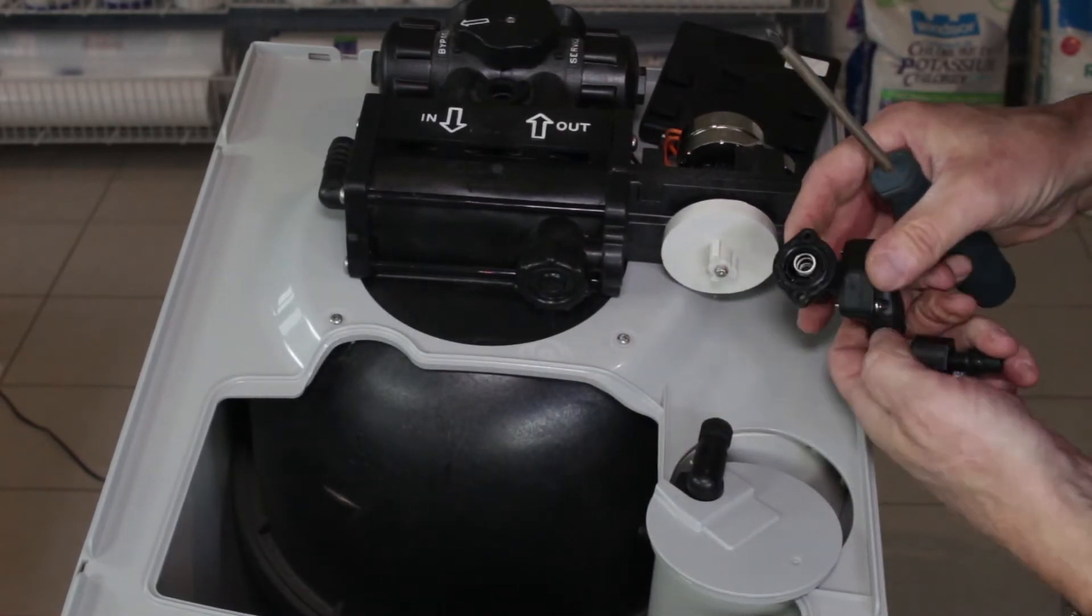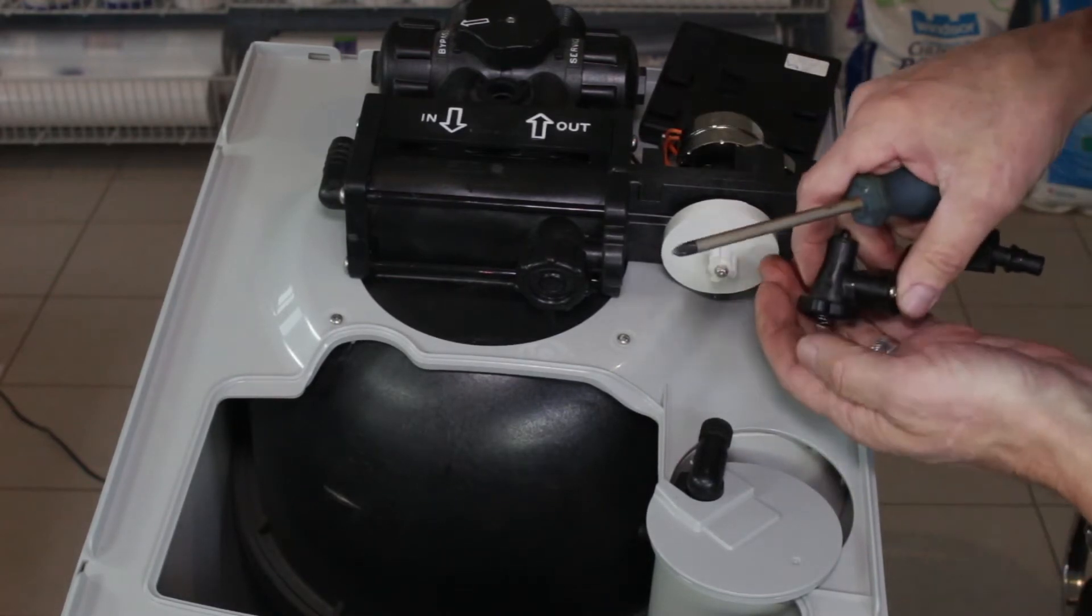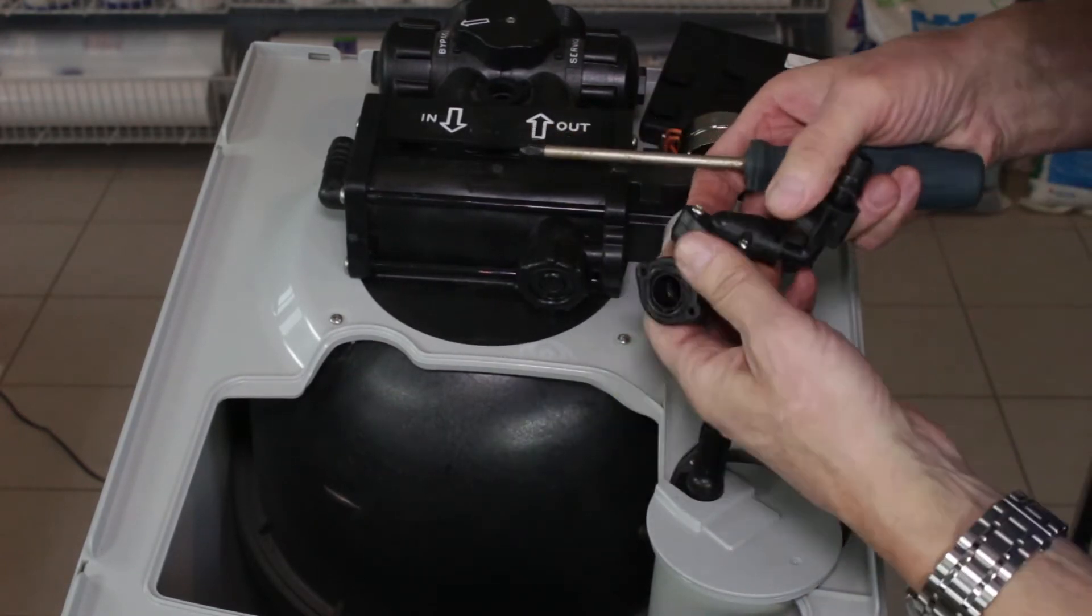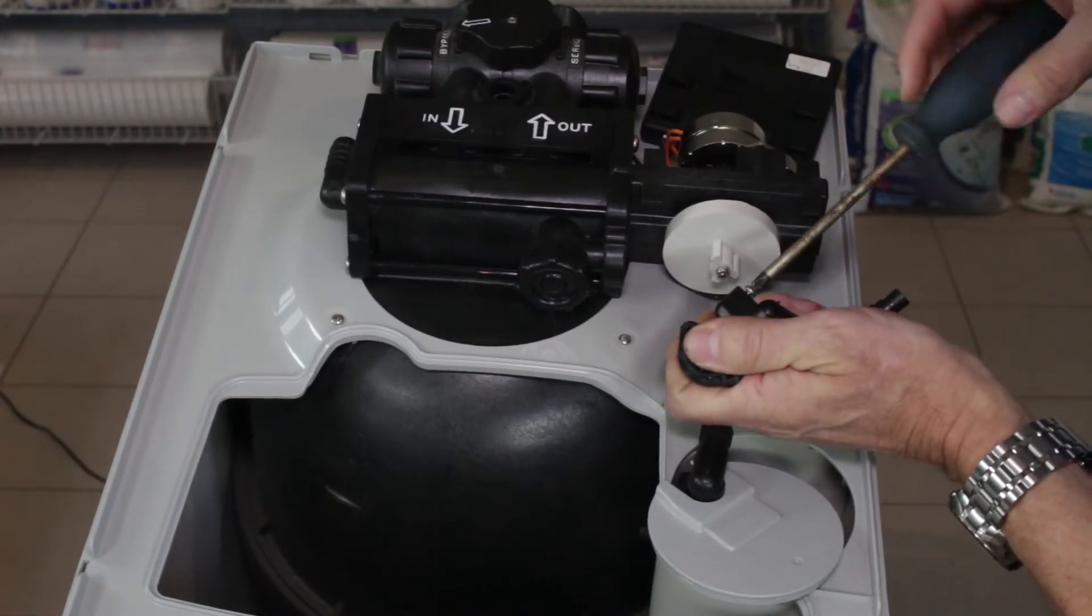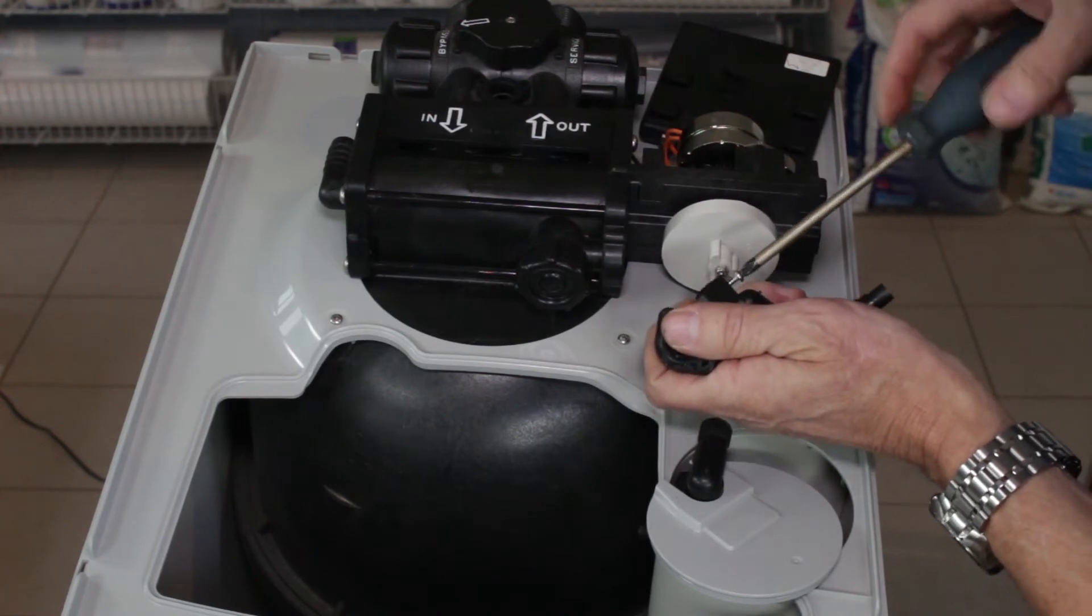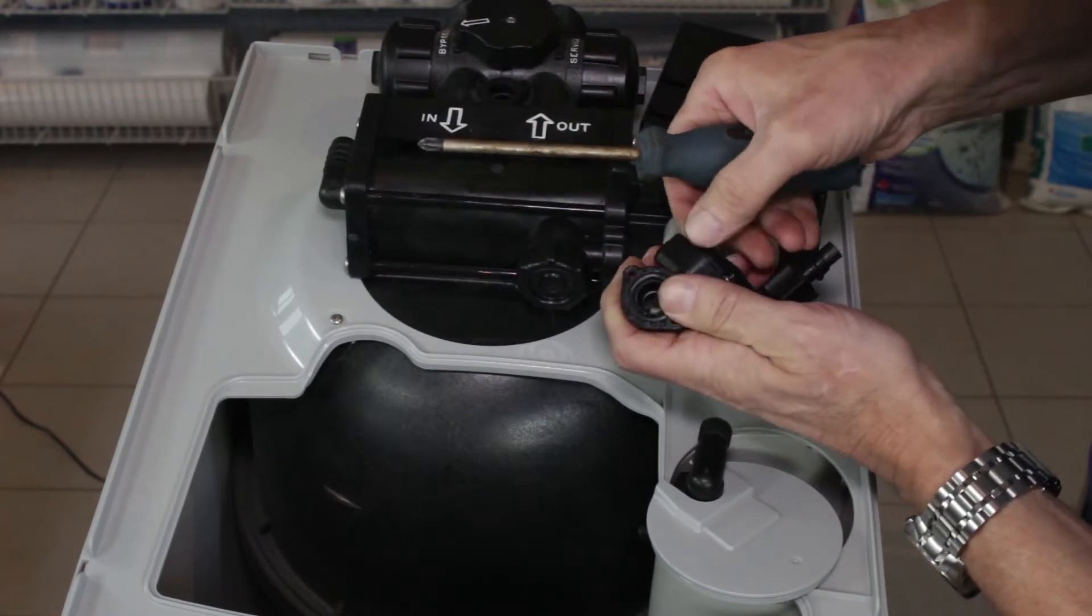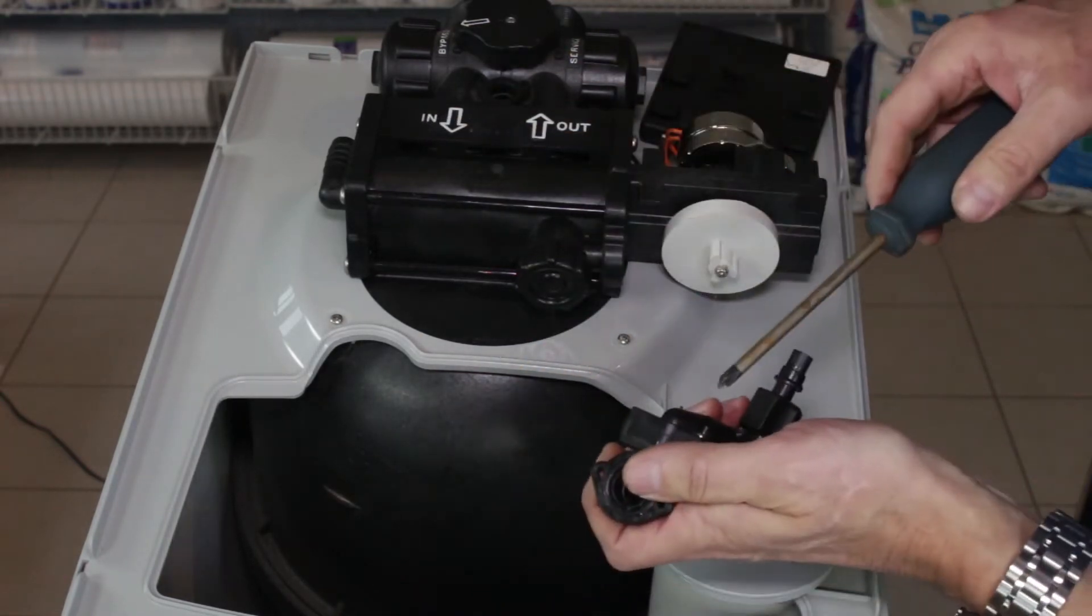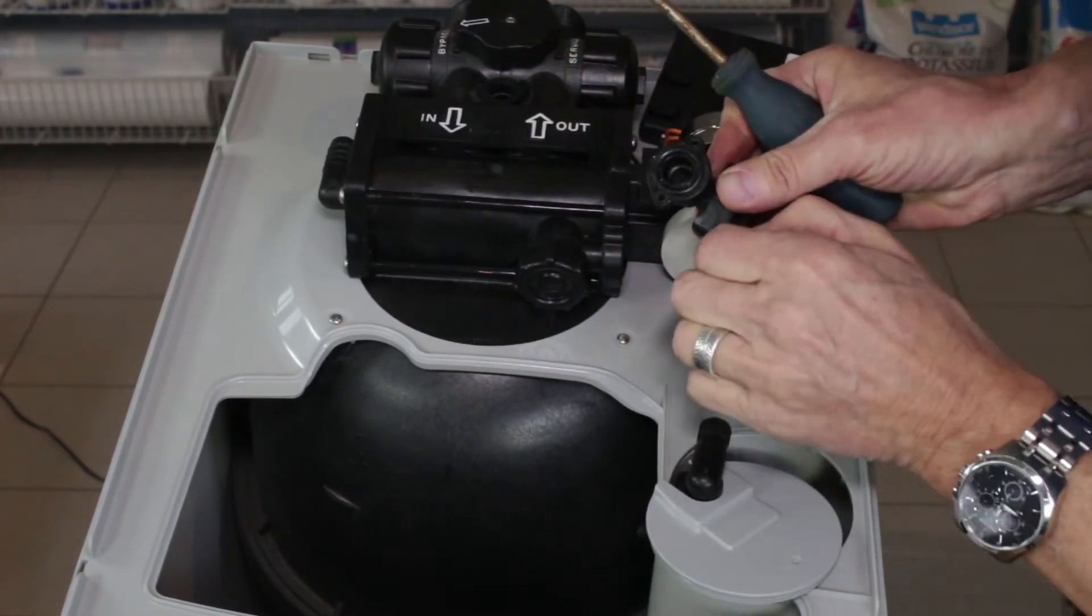All right, so the brine piston is inside here. What I'm going to do is just let that fall out, and then I'm going to remove these two screws here so we get access inside to the brine line flow control just inside here, and set this aside and remove that screw too.